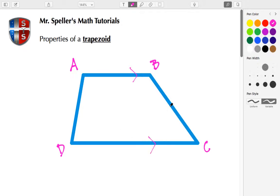The other two sides, or the other two segments that are not parallel, are called the legs. So BC is a leg and AD is also a leg.